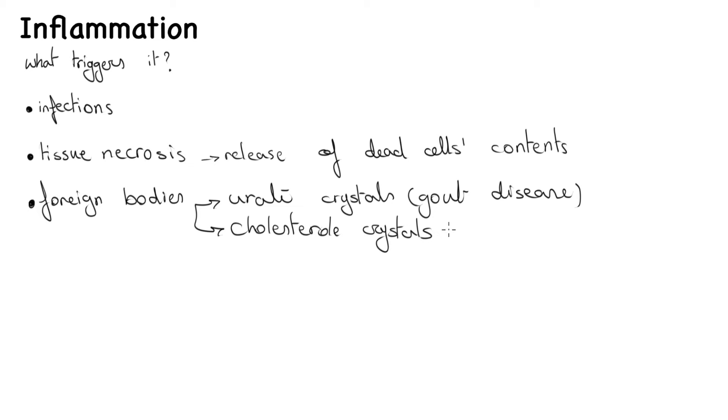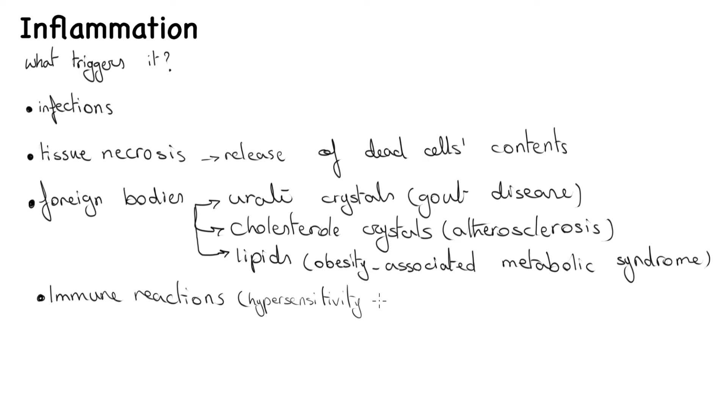For example, urate crystals in gout disease, cholesterol crystals in atherosclerosis, or lipids in obesity-associated metabolic syndrome. The fourth one would be immune reactions or sensitivity reactions, which can be triggered by self-antigens, for example in autoimmune diseases, or environmental substances in allergies.